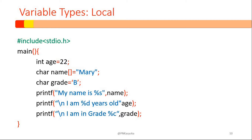Looking at the code shown here, these are codes that demonstrate the use of local variables. The program starts with hash include, then we have the main function. Inside the body of main, we have a declaration of age as integer assigned value 22, a character array name assigned Mary, and a character grade assigned 'b'. Note we have double quotes for the string assignment of name, and single quotes for the character assignment of grade. Using double quotes for grade would cause an error.